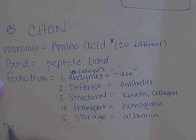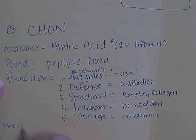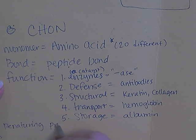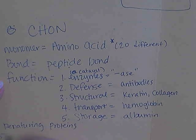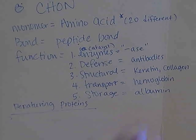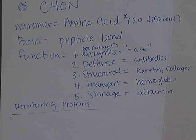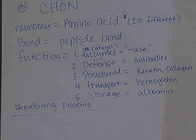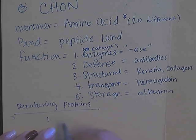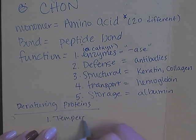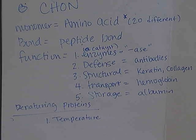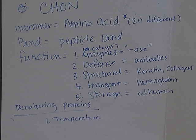Proteins can be what we call denatured, which means they are made non-functional. Denaturing a protein means we take a protein and make it basically stop working. There are several different ways we can do this. Number one, we can expose the protein to a change in temperature. You see this very often — a good example is egg whites.